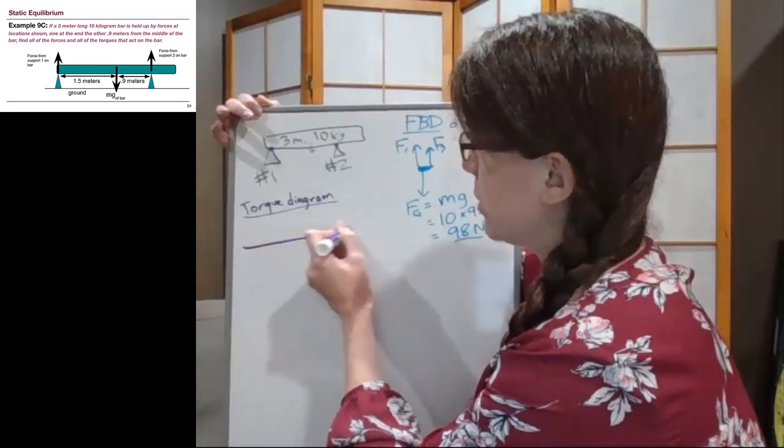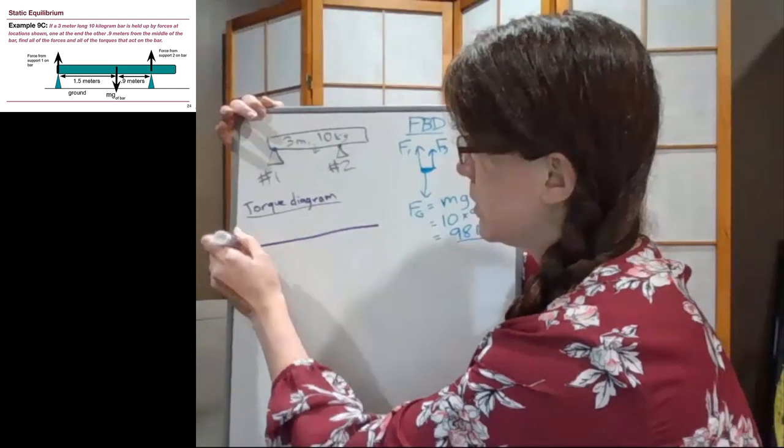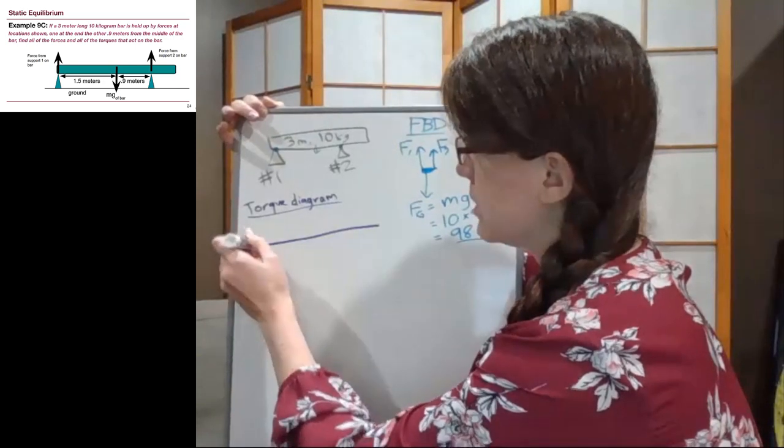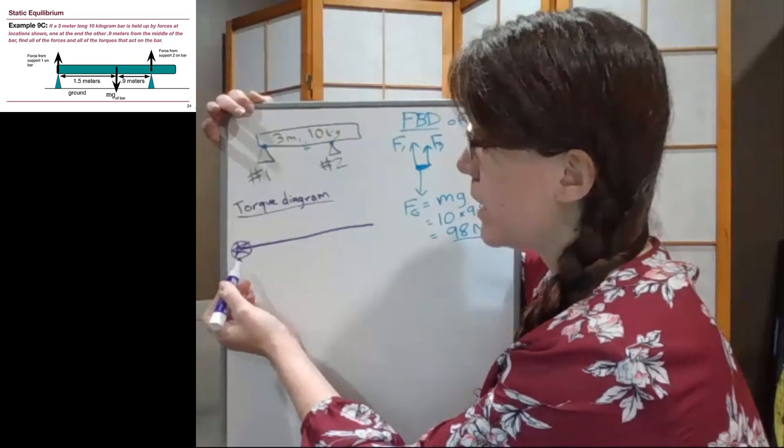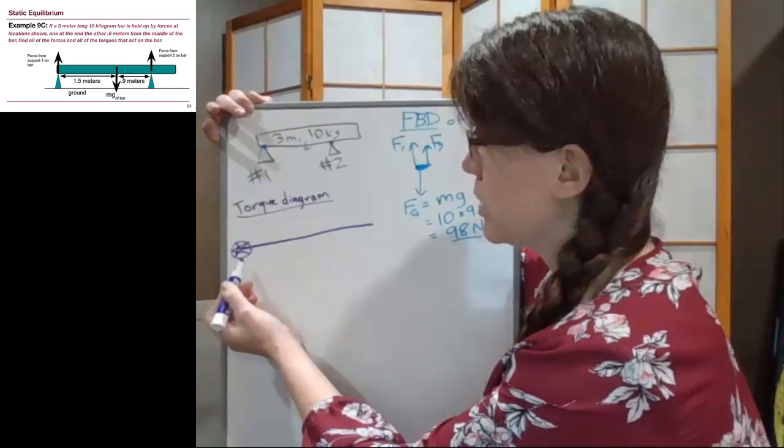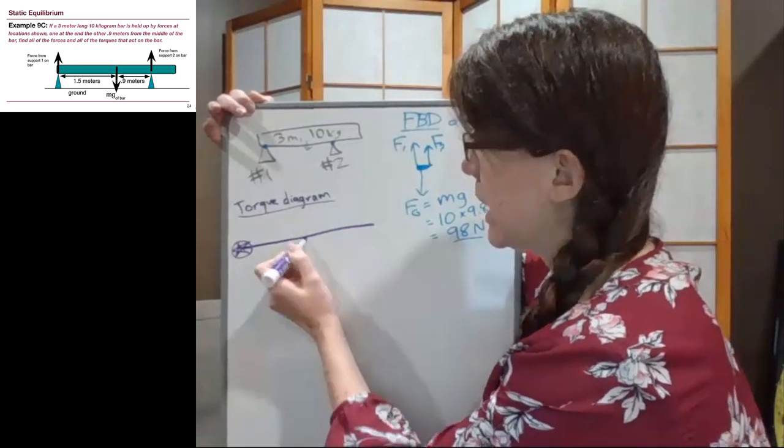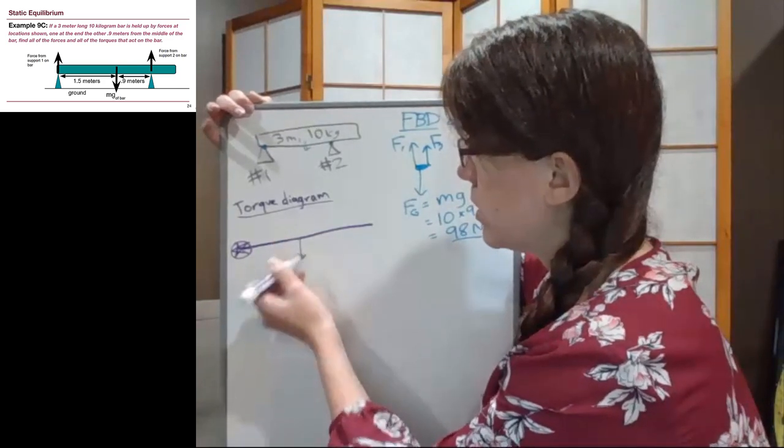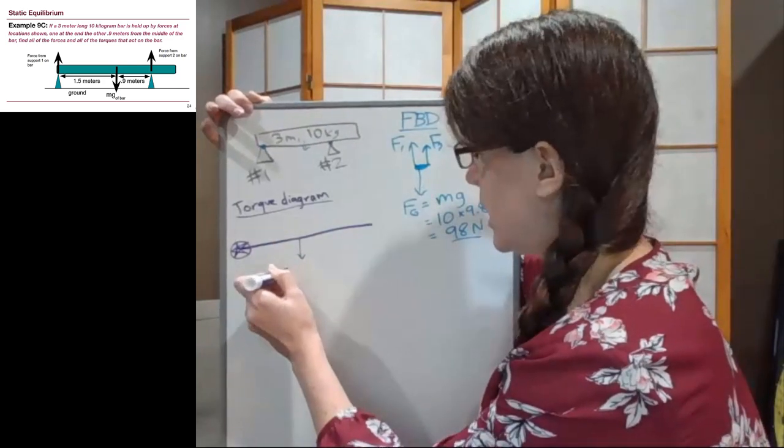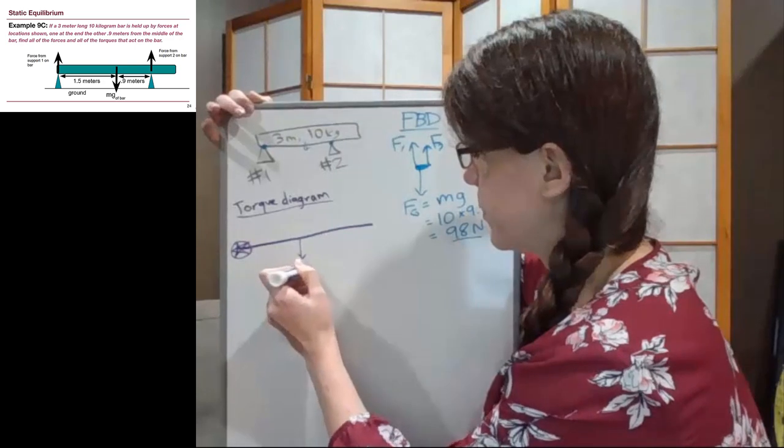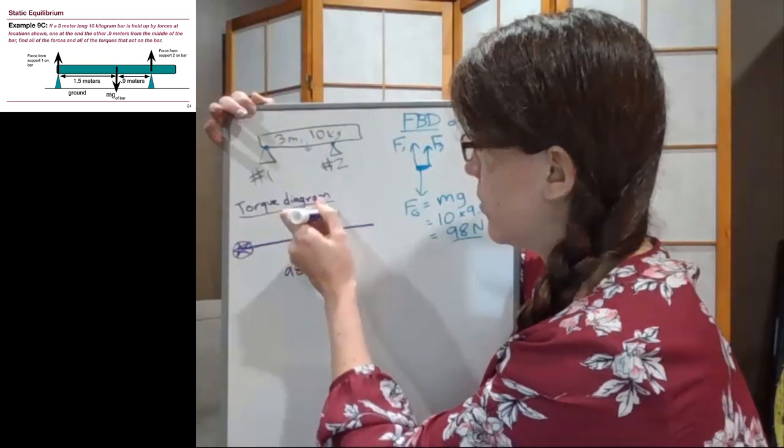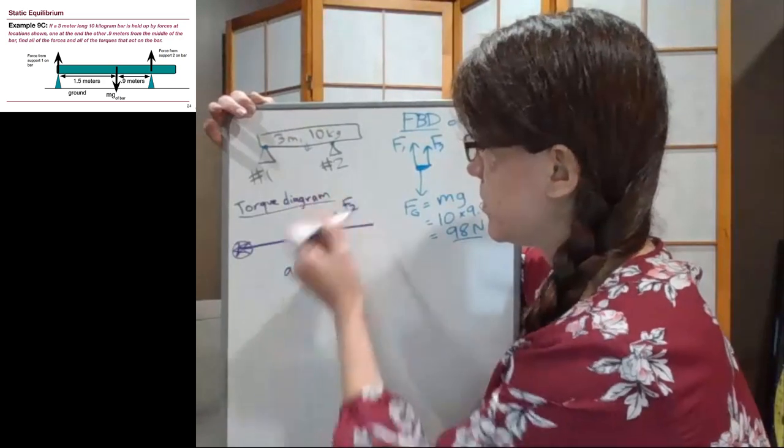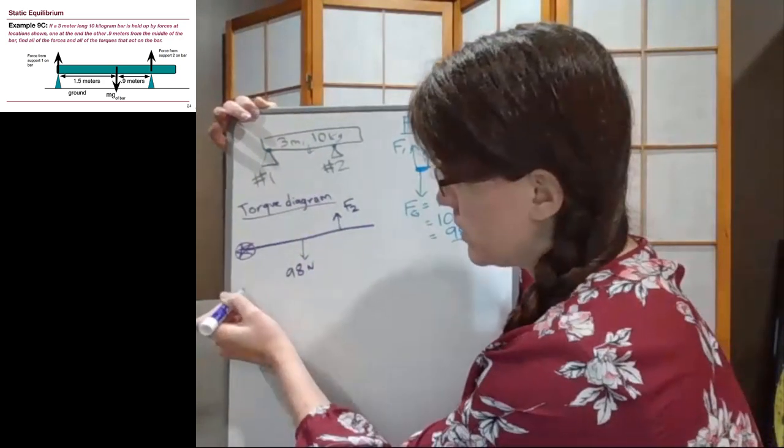Okay. So step one, we draw the bar. Step two, we choose an axis. Step three, we draw in the forces. The force at the axis is not included in the torque diagram. So we go out and halfway along the bar, we have 98 newtons. We keep going and further along the bar, we have F2.